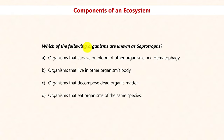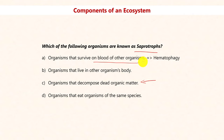Which of the following organisms are known as saprotrophs? Saprotrophs are organisms that feed on dead and decaying matter to obtain nutrition — examples include all detritivores and fungi species like mushrooms. The answer is C. Other options: organisms that survive on the blood of other organisms (like mosquitoes and leeches) practice haematophagy; organisms that live on other organisms' bodies are parasites; and organisms that eat organisms of the same species are cannibals.